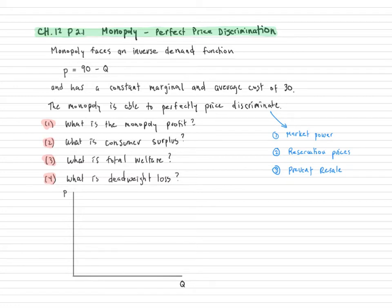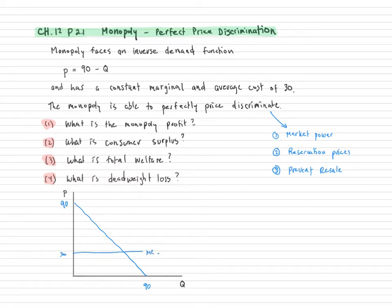The monopoly can capture the whole area below the demand curve and above the price. So let me draw this diagram. We have a demand curve that starts at 90 and goes to 90 on the quantity axis. And we have a marginal and average cost that is constant at 30 — that is our marginal cost, which equals average cost because it's constant.